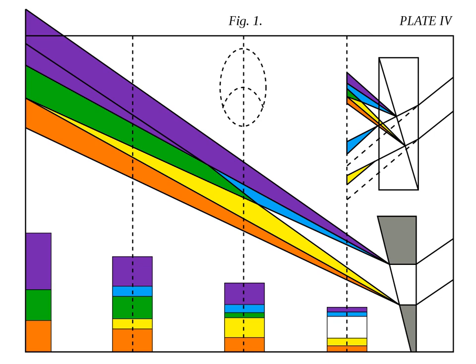Goethe, therefore, concluded that the spectrum is a compound phenomenon. Color arises at light-dark boundaries, and where the yellow-red and blue-violet edges overlap, you get green in the middle.